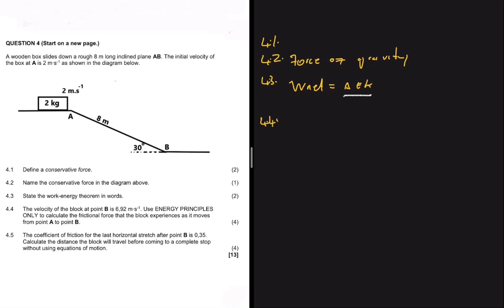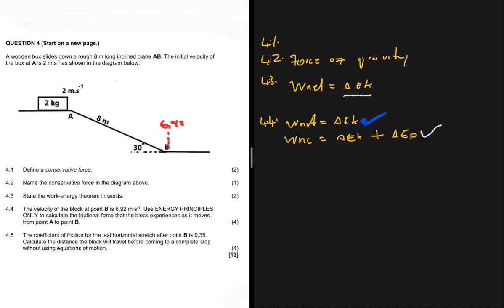For 4.4, the velocity of the block at point B is 6.92 m/s. The question says to use energy principles only to calculate the frictional force the block experiences as it moves from point A to point B. There are two equations we can use: W_net equals change in E_k, or work done by non-conservative forces equals change in E_k plus change in E_p. I'll use the second equation.